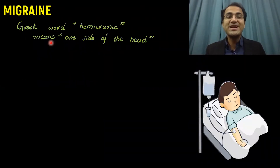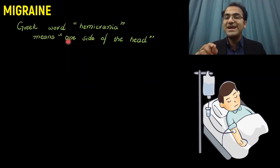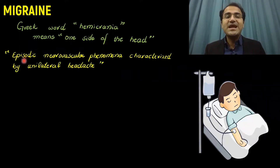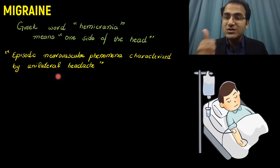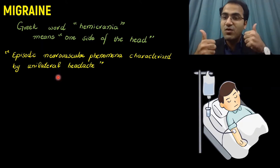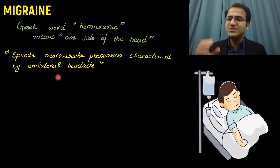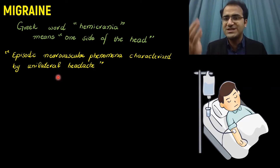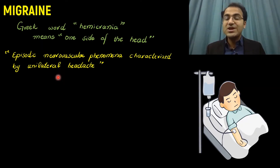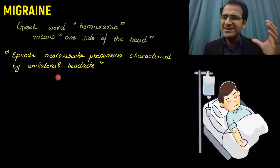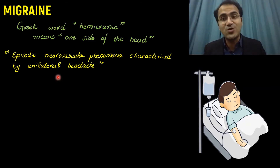What is migraine? Migraine is derived from a Greek word 'hemikrania', which means one side of the head, because the pain of migraine headache involves one side of the head. Migraine is defined as an episodic neurovascular phenomena characterized by a unilateral headache. It involves the neurons and the vessels. What happens in migraine headache is there is paradoxical vasoconstriction of the vessels surrounding the brain, and then later on there is vasodilation of the vessels, resulting in throbbing headache.